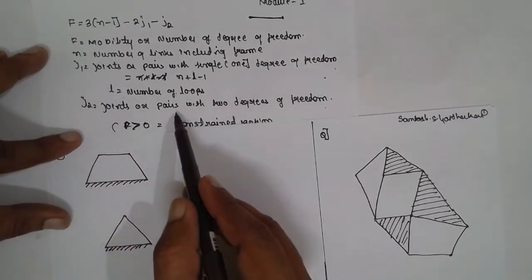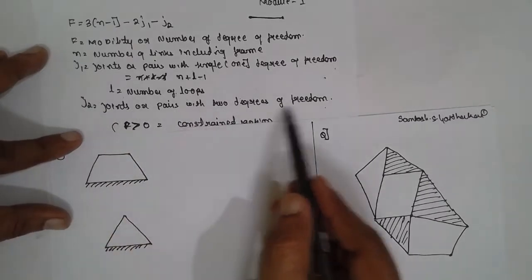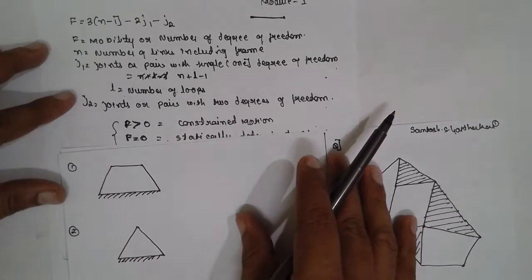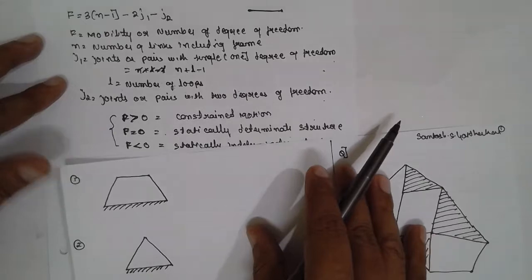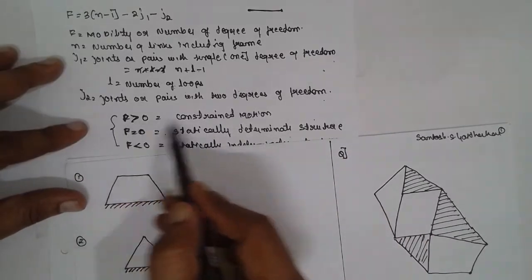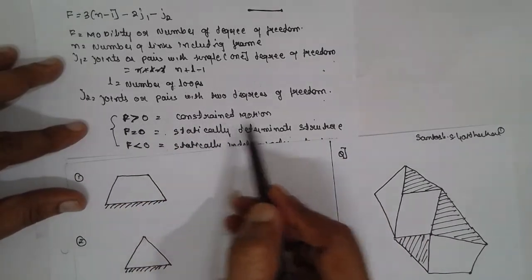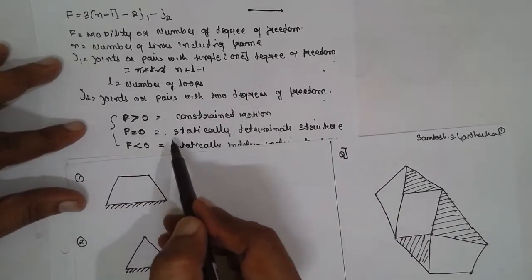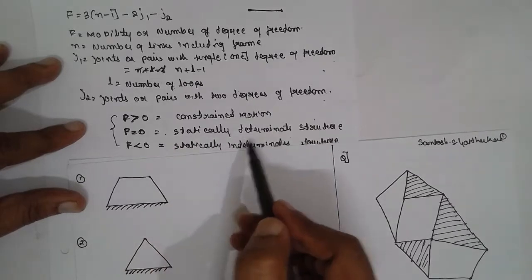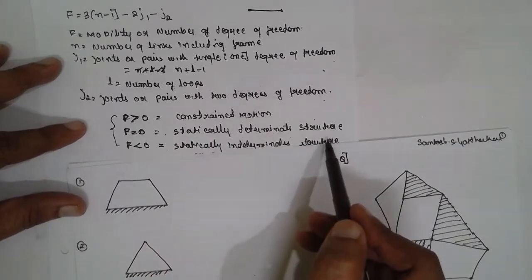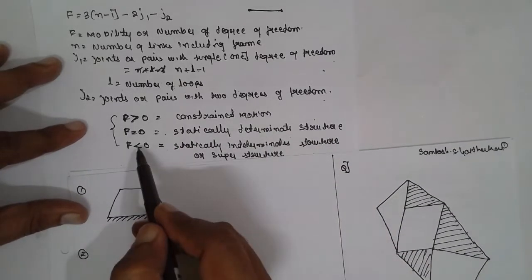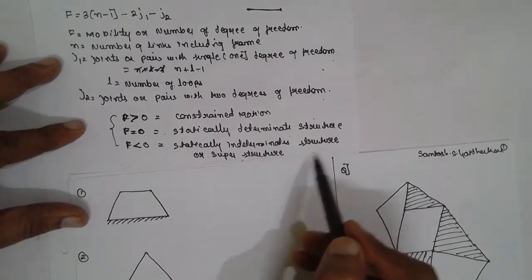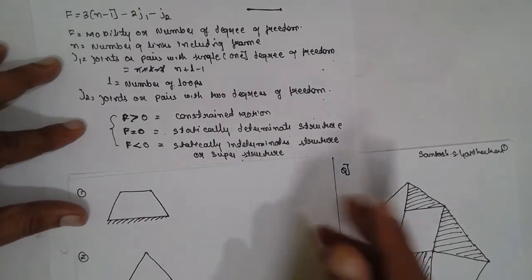j2 is the joint or pair with 2 degrees of freedom. The conditions are: if f is greater than 0, we call it constrained motion; if f is equal to 0, it is a statically indeterminate structure; and if f is less than 0, we call it a superstructure or statically indeterminate structure.